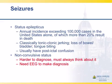Seizures are really important as a cause of alteration of mental status, and people don't think of it nearly enough. Status epilepticus of the classic type is tonic-clonic jerking with loss of bowel and bladder, and they'll have a post-ictal confusional state, which is usually an encephalopathy-type picture. The difficulty is there's a process called non-convulsive status epilepticus.